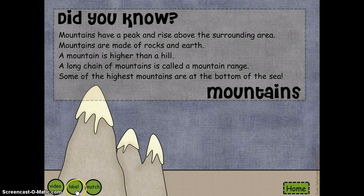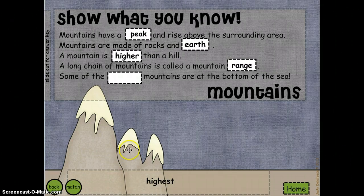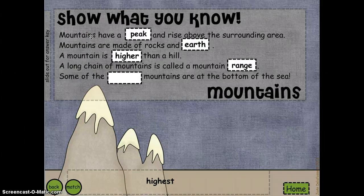The next button is for the labeling game, so let's click there. Here we have the Show What You Know page. This is primarily a cloze passage of the Did You Know page. Students read the sentence and choose a word from the word box. I've done most of them for you already, so let's just finish out the last one.